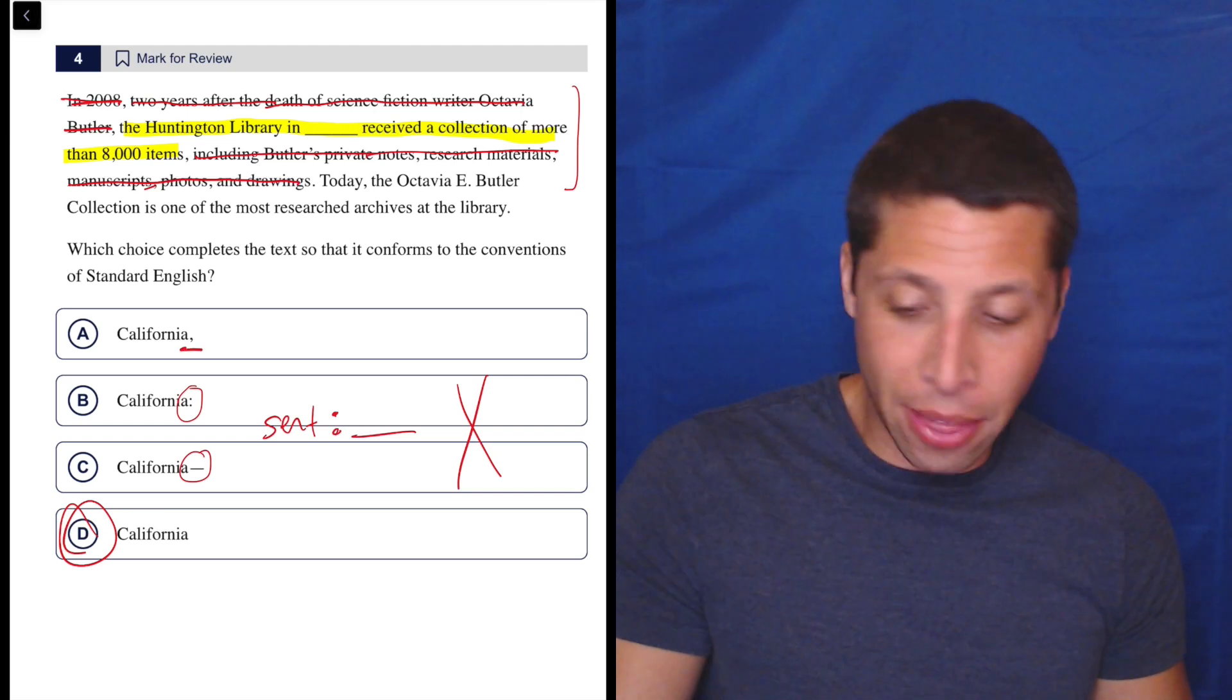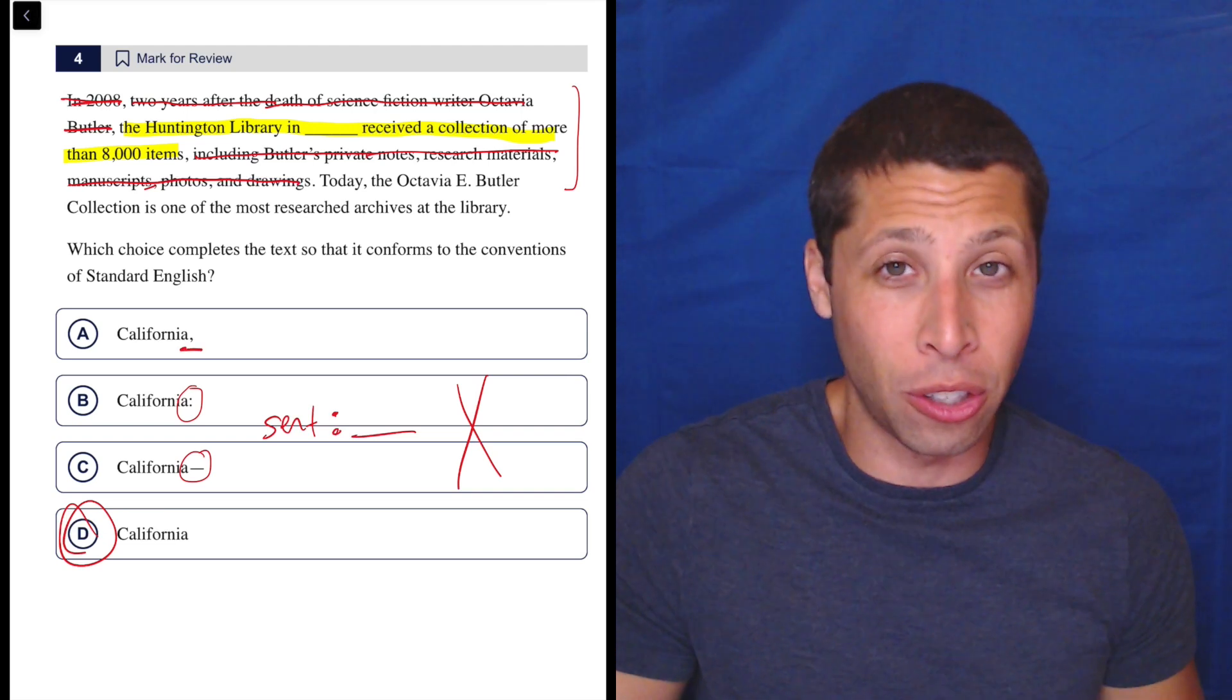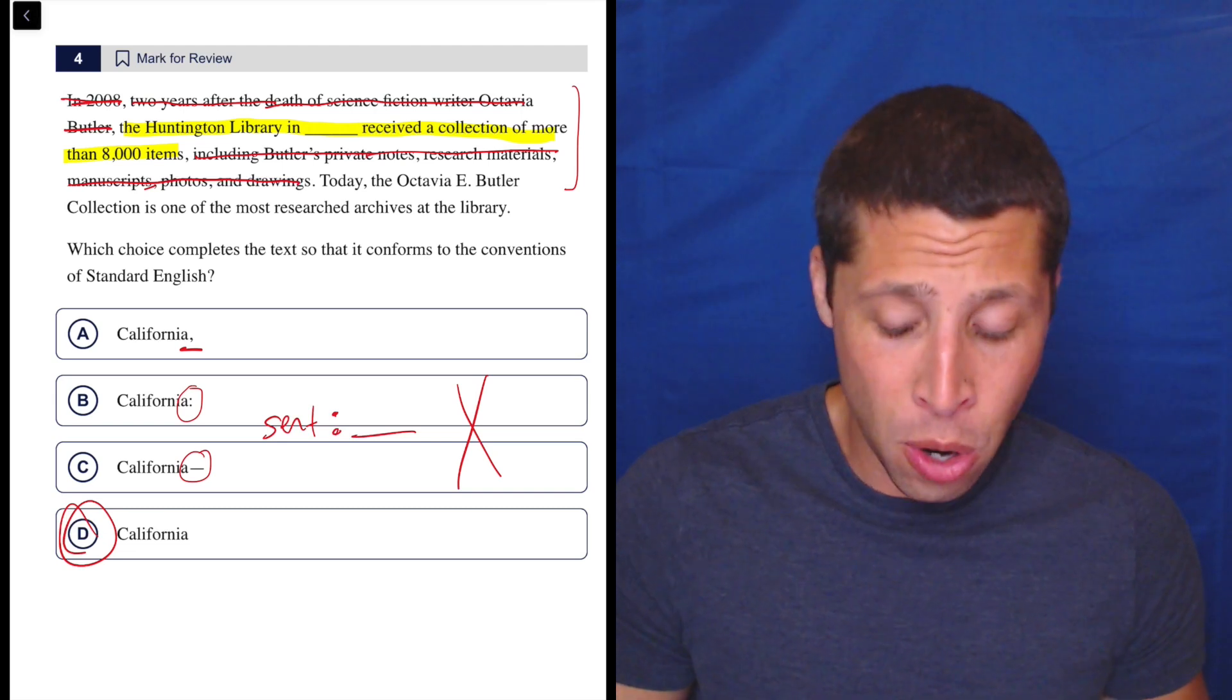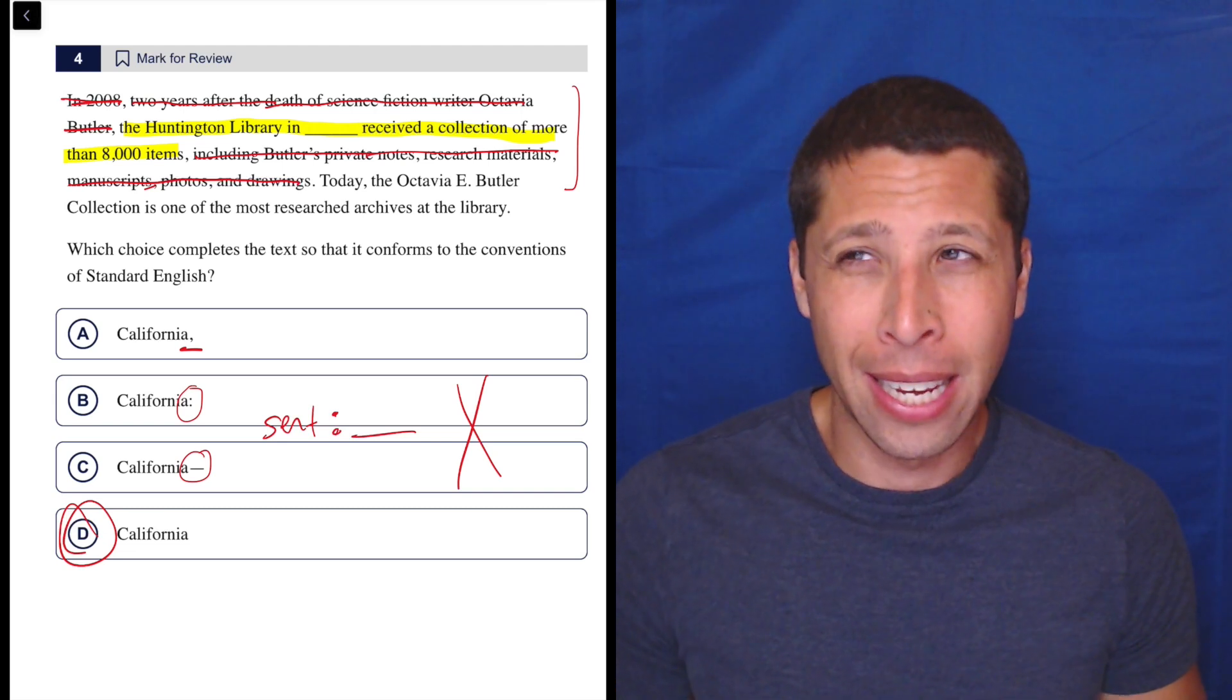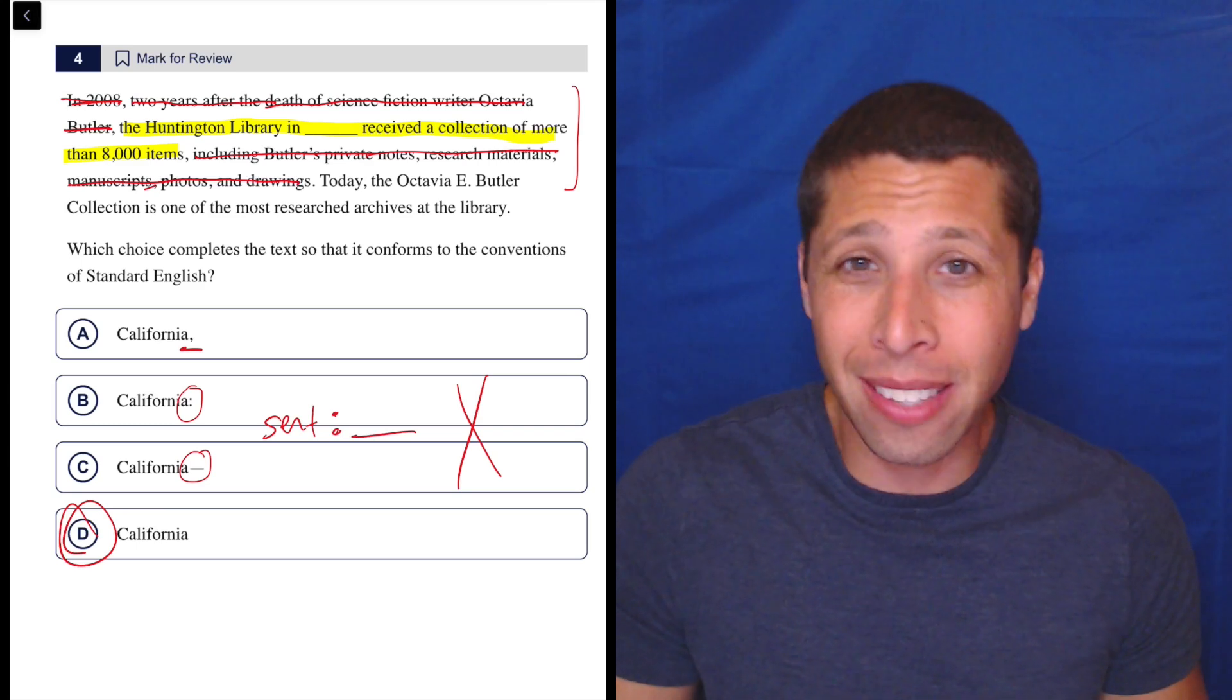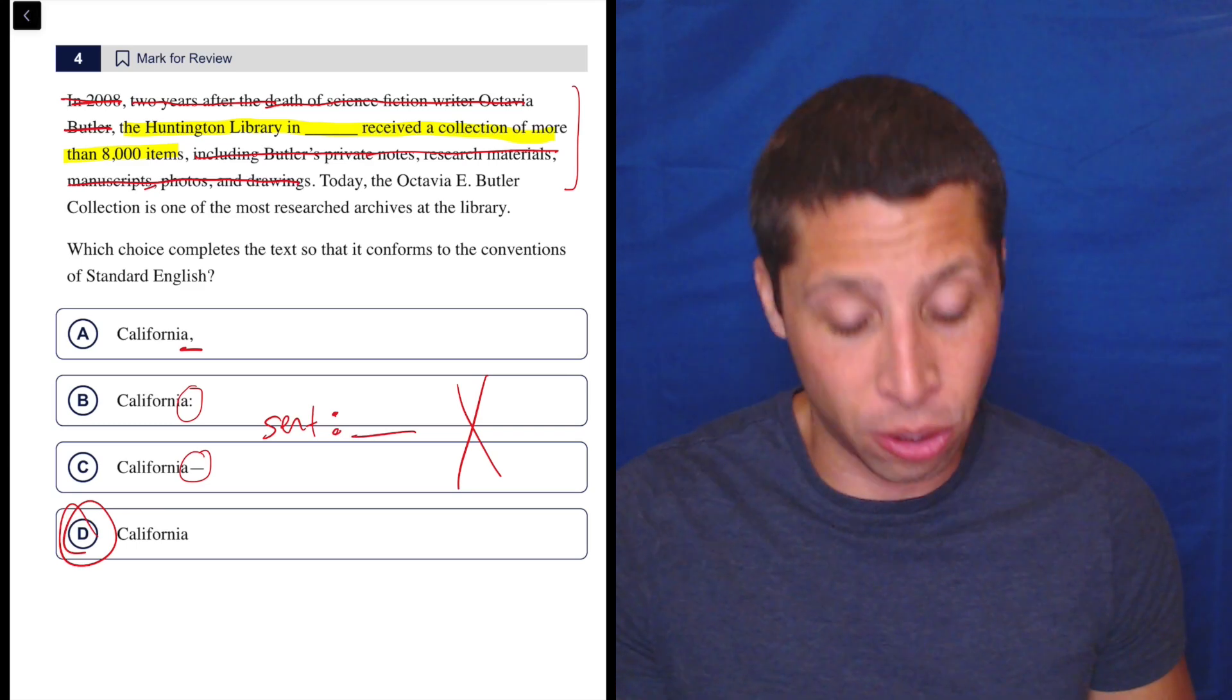The only thing I think people might do with a comma here is you're just kind of maybe seeing a bunch of other commas and that maybe tempts you, or you do realize that when we have like a state in the country, like we sometimes put commas around states and cities, but that's just not happening here. So it has nothing to do with that.